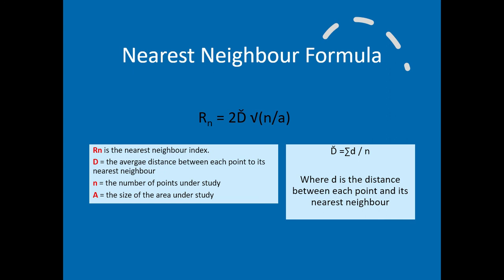Rn is the nearest neighbour index, so we're looking for an answer that is Rn equals. That's what we're looking for. That's the score we're looking for. And then there's some other letters, which you can see I've given you a key to. We need to know the size of the area that we're studying, so you would calculate the area on the map that you are studying. You would need to know the number of points that you're studying. You must have a minimum of 30 for the sums to work. And D is the average distance between each point to its nearest neighbour.